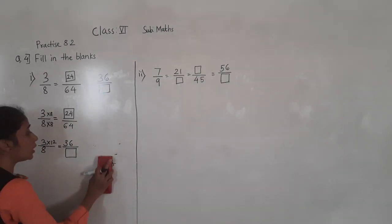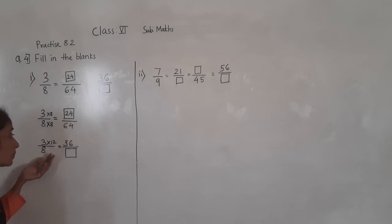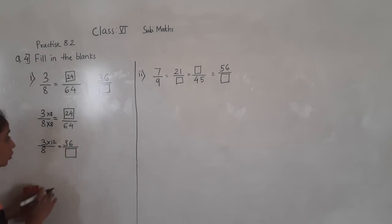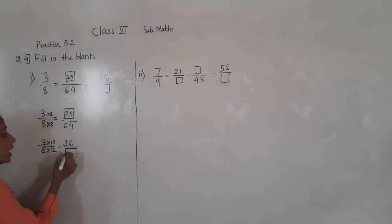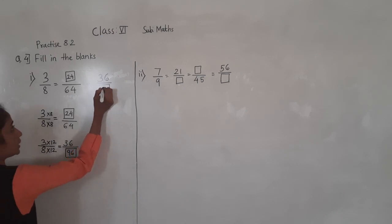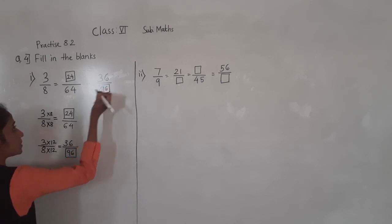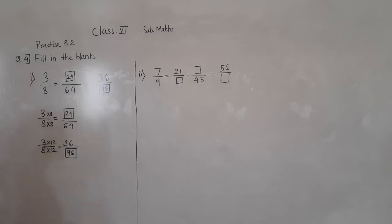So now we are going to multiply by 12 for the denominator also to get the equivalent fraction. So 12 eights are 96. So what we get in that blank box: 96.